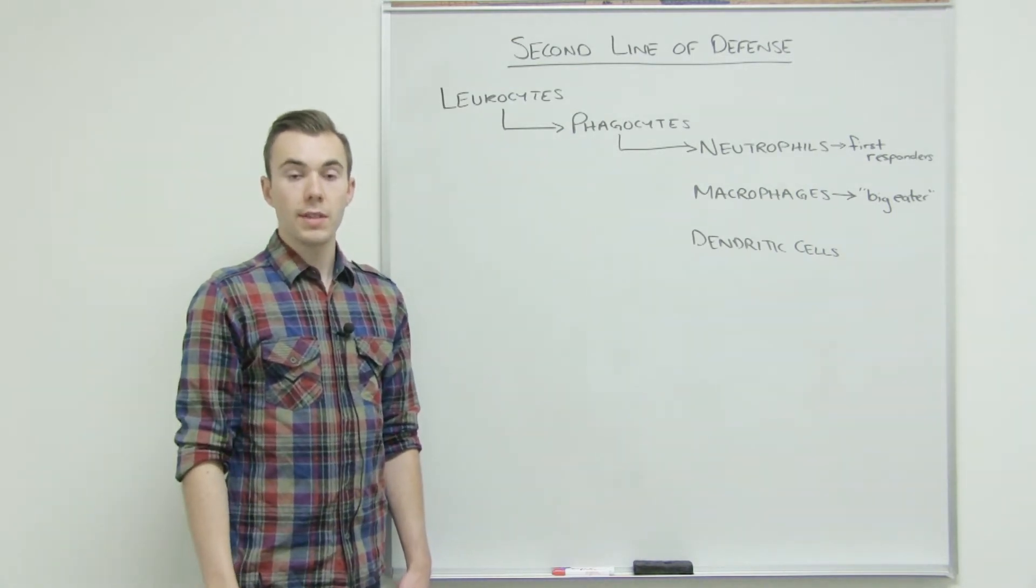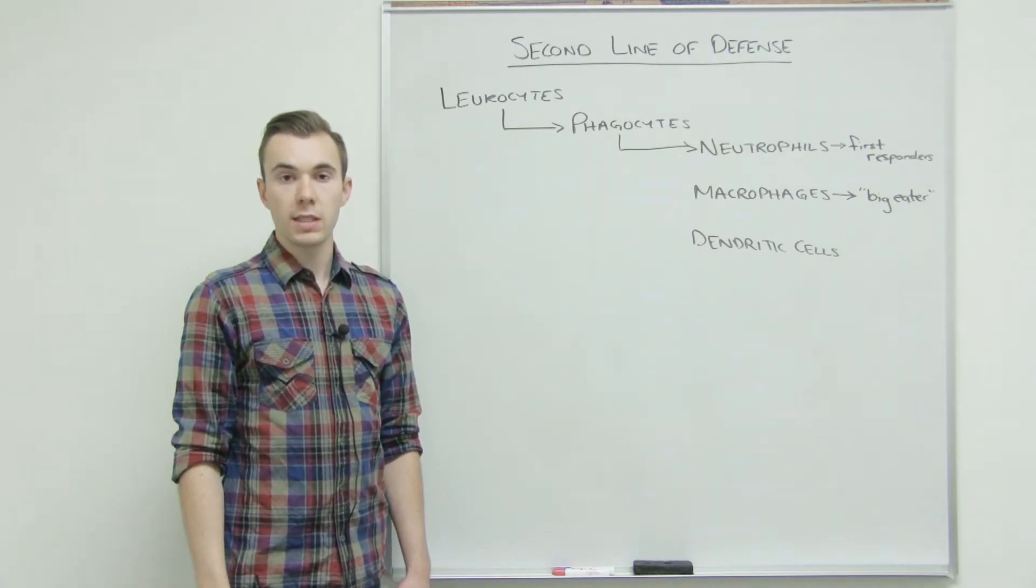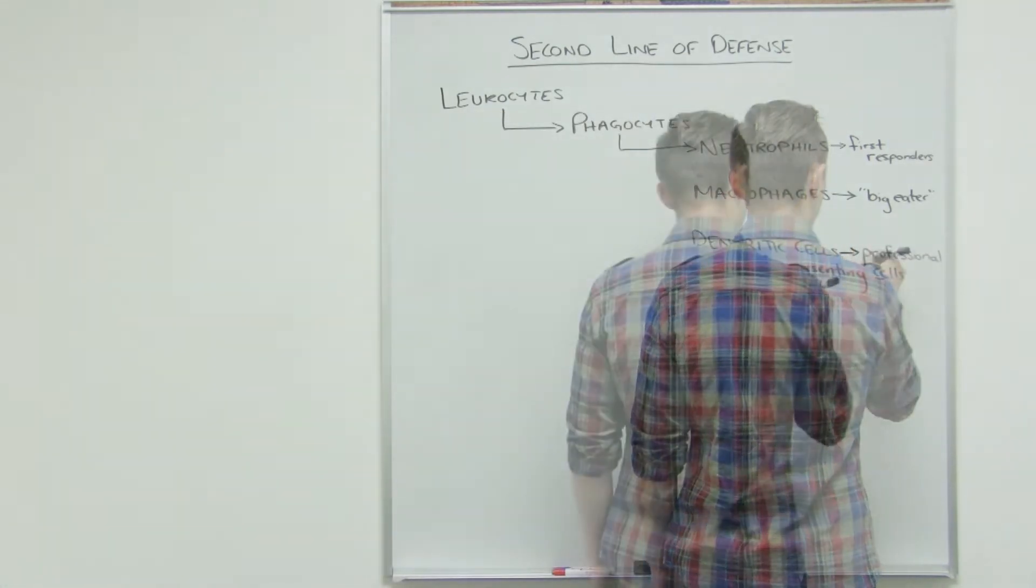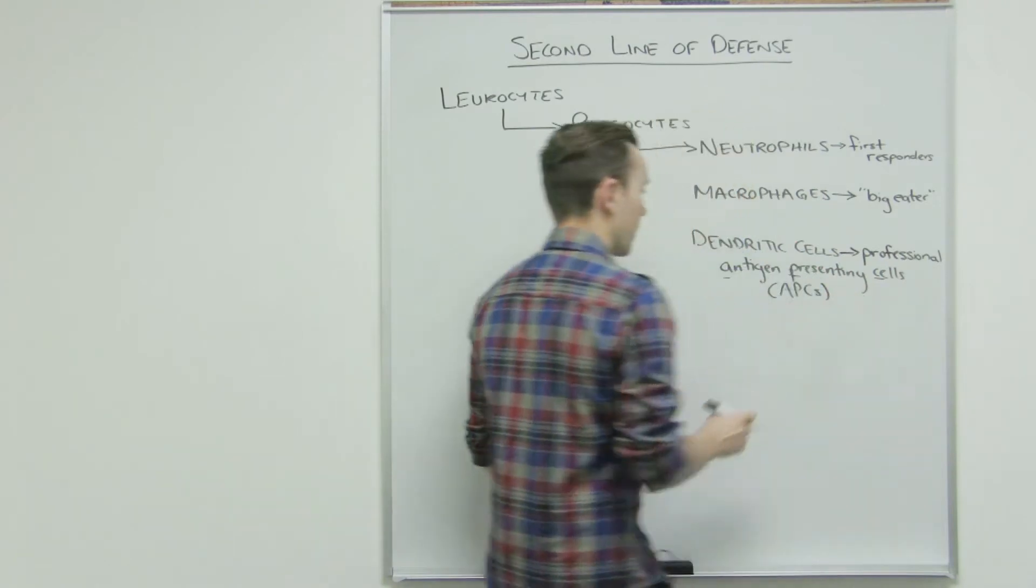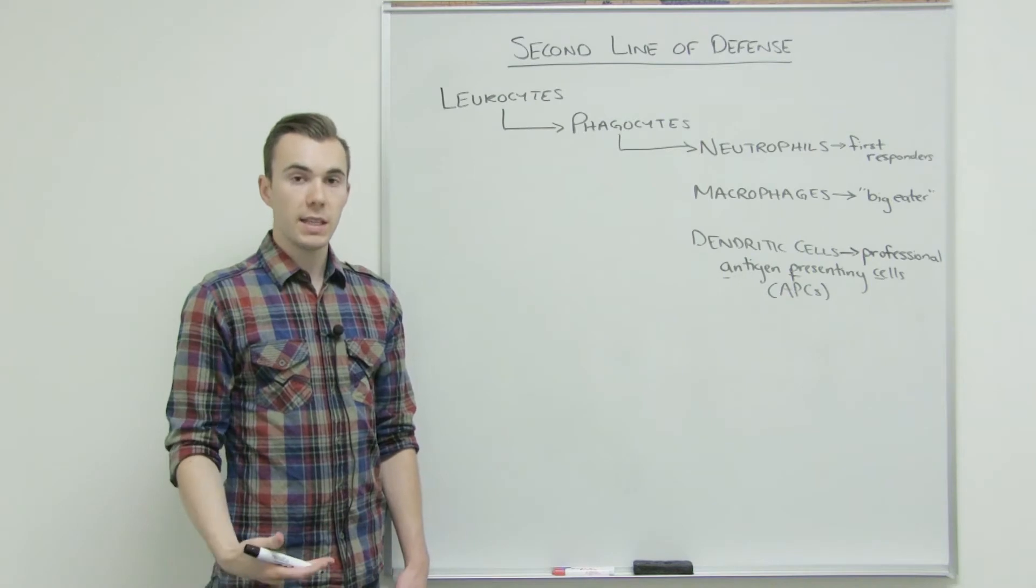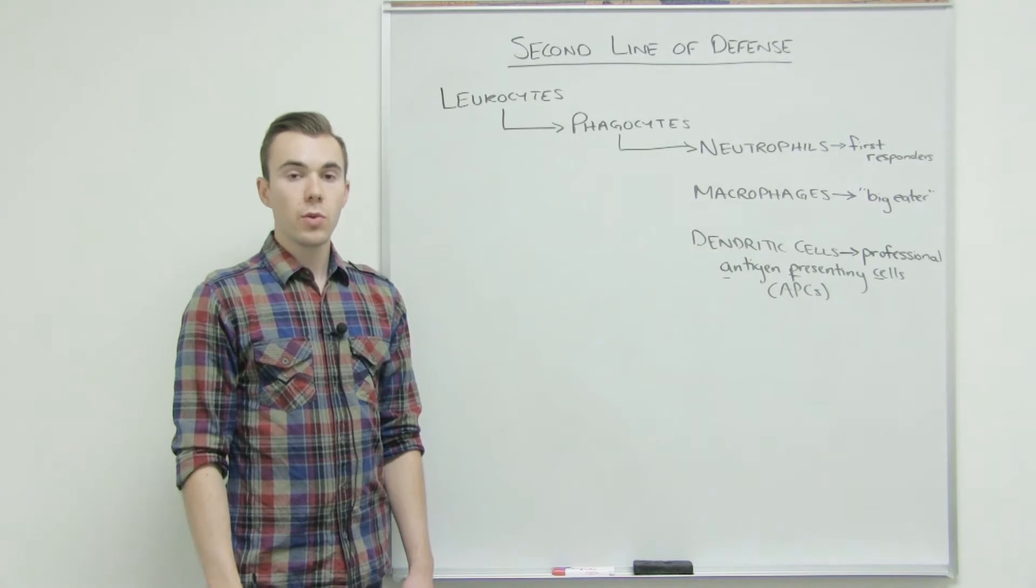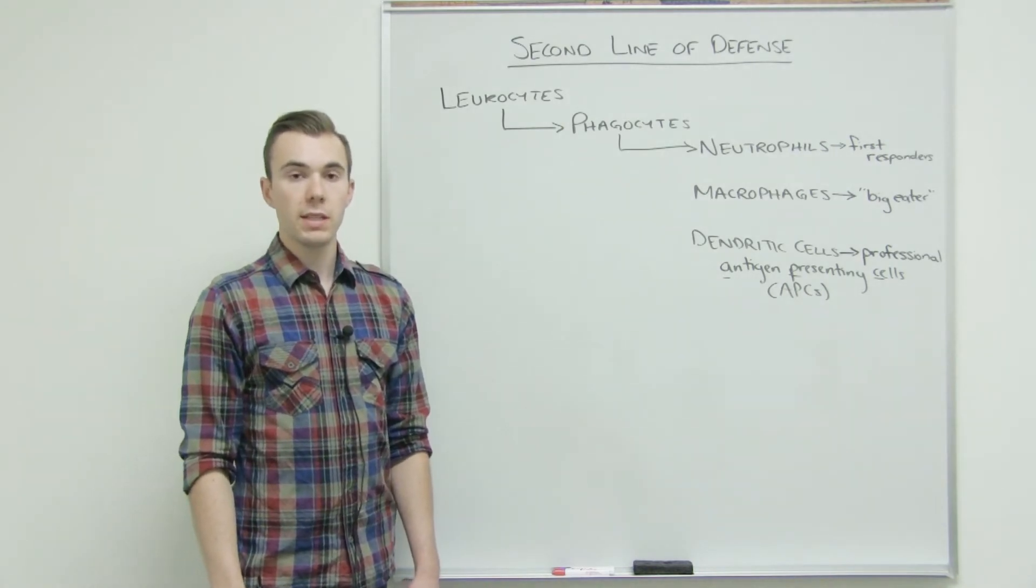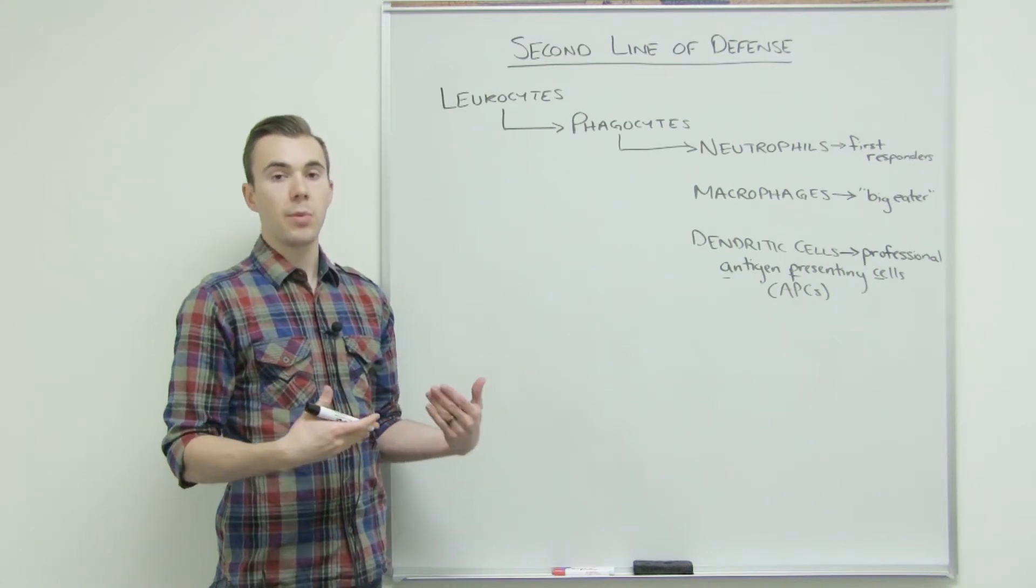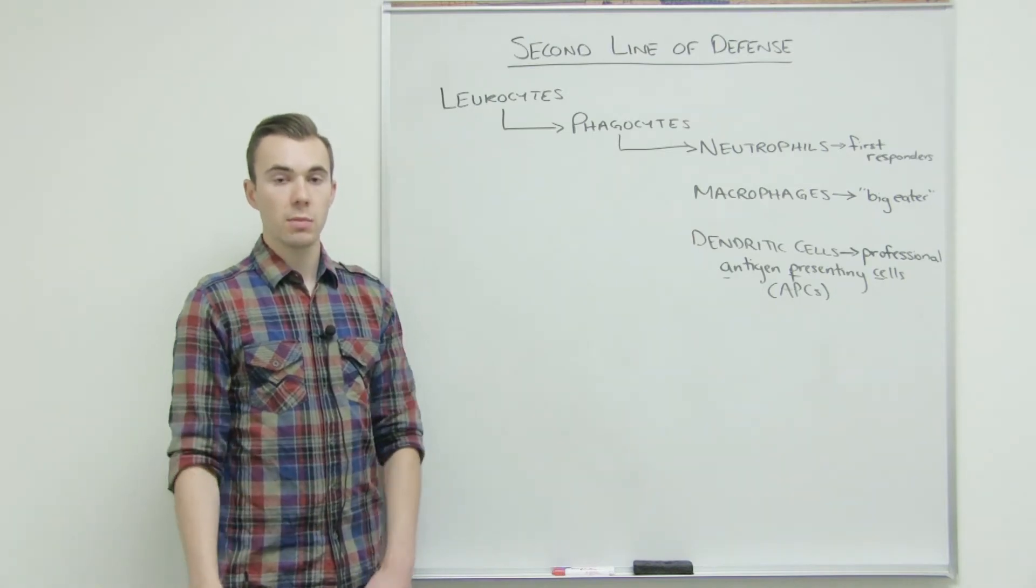Then our last ones are the dendritic cells. Dendritic cells are going to be the professional antigen presenting cells, or APCs. These cells are going to be professionals, which means they're really good at presenting antigens, anything foreign to the body, to the third line of defense. These are the cells that are going to be the best at telling the third line of defense there's something foreign, look at what it is, and help the third line of defense gain memory against any sort of potentially dangerous microbe.